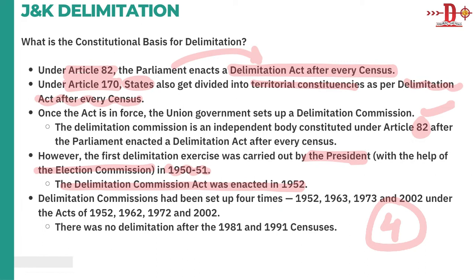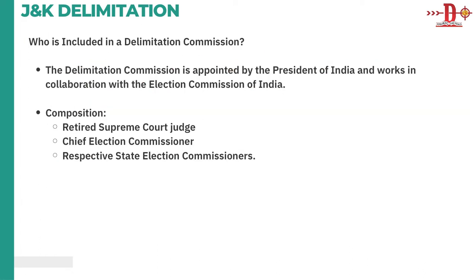After 2002, boundaries have been frozen until 2026. There was no delimitation after the 1981 or 1991 census. The delimitation commission is appointed by the President of India and works in collaboration with the Election Commission of India. Its composition includes a retired Supreme Court judge, the Chief Election Commissioner, and the state election commissioner of the respective state.